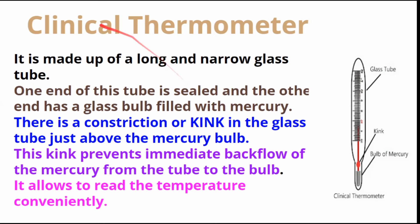Let us see the structure and working of the clinical thermometer. It is made up of a long, narrow glass tube as you can see in the picture. One end of this tube is sealed, and the other end has a glass bulb filled with mercury. You can see a bulb of mercury here.